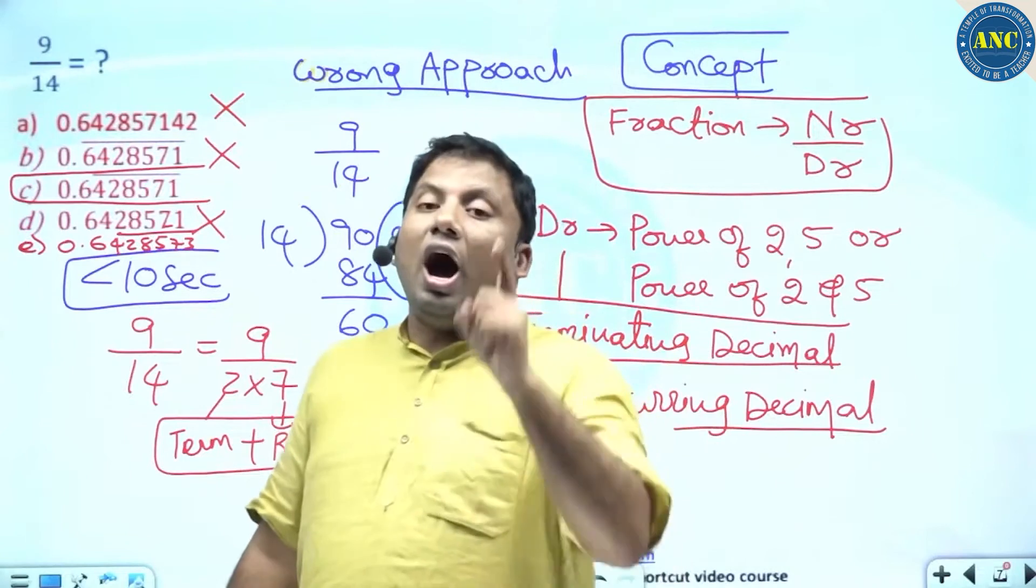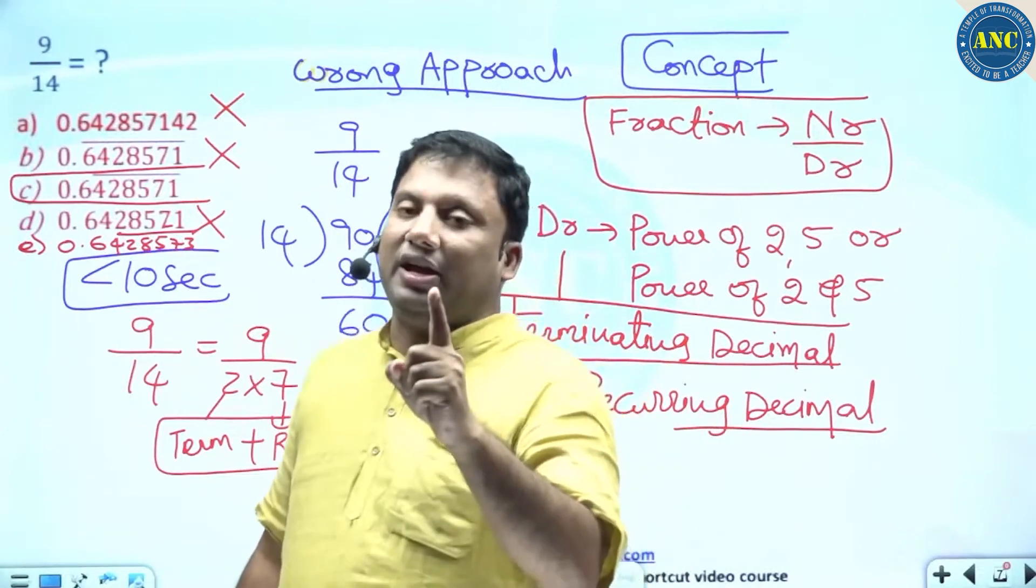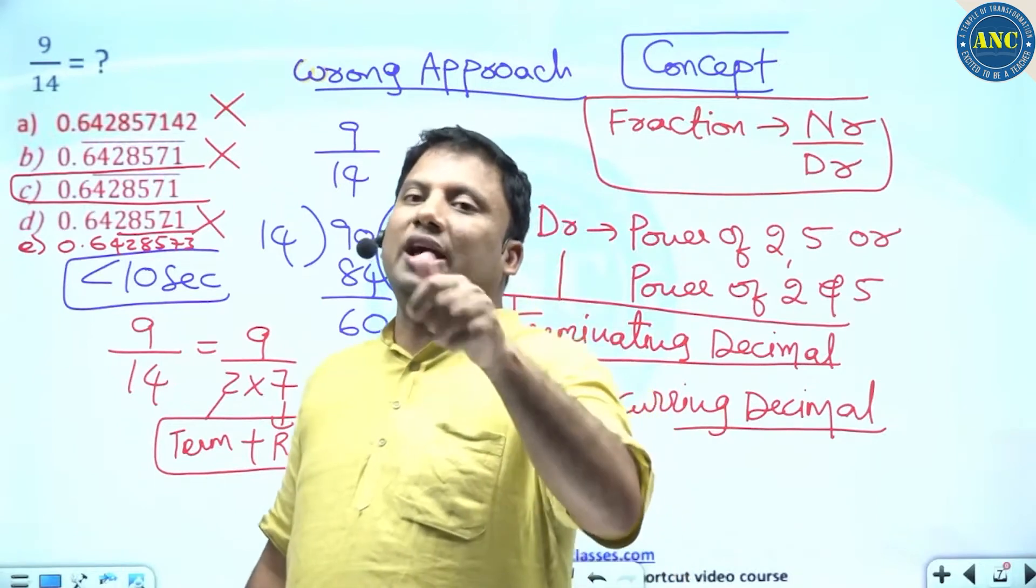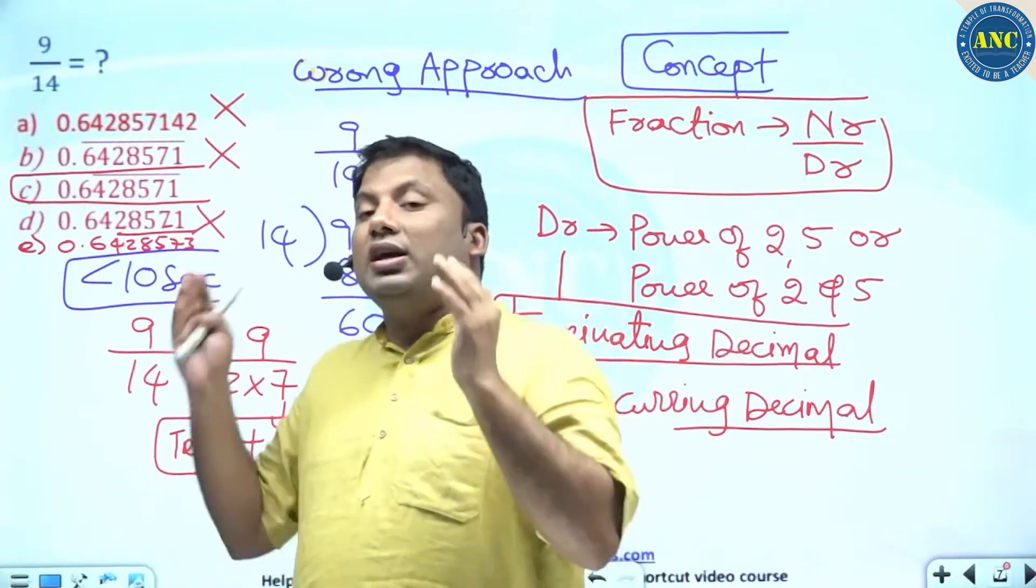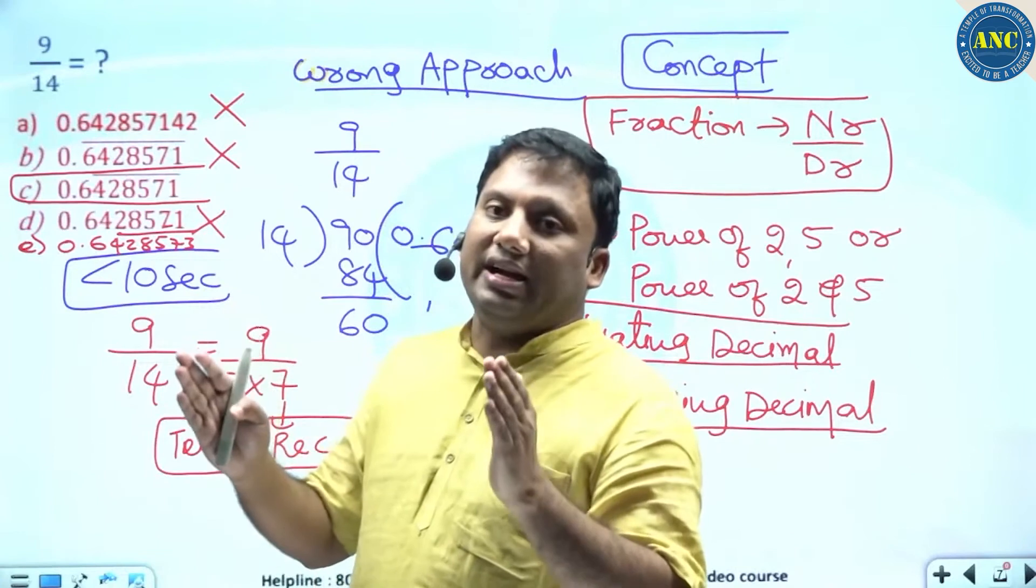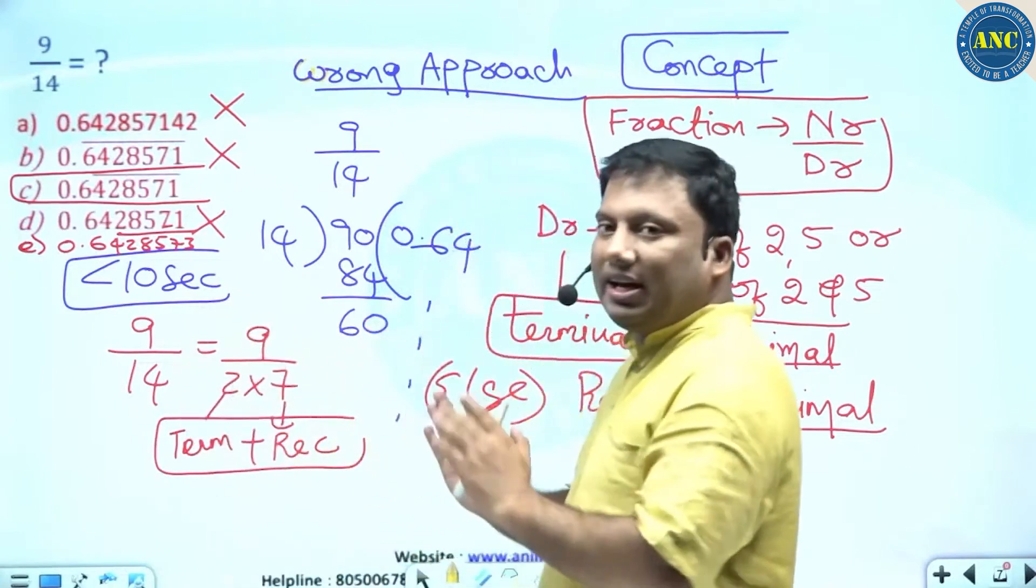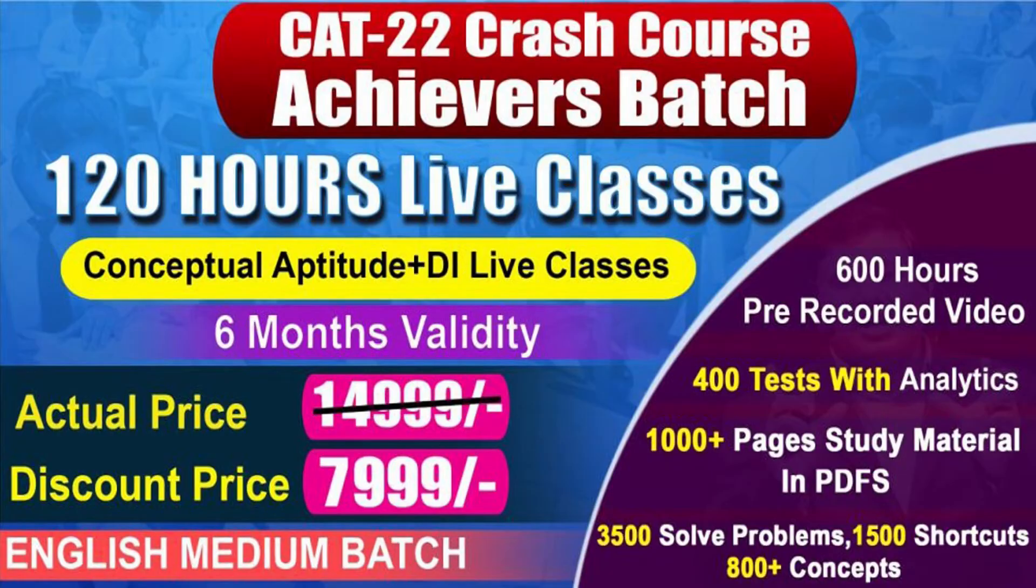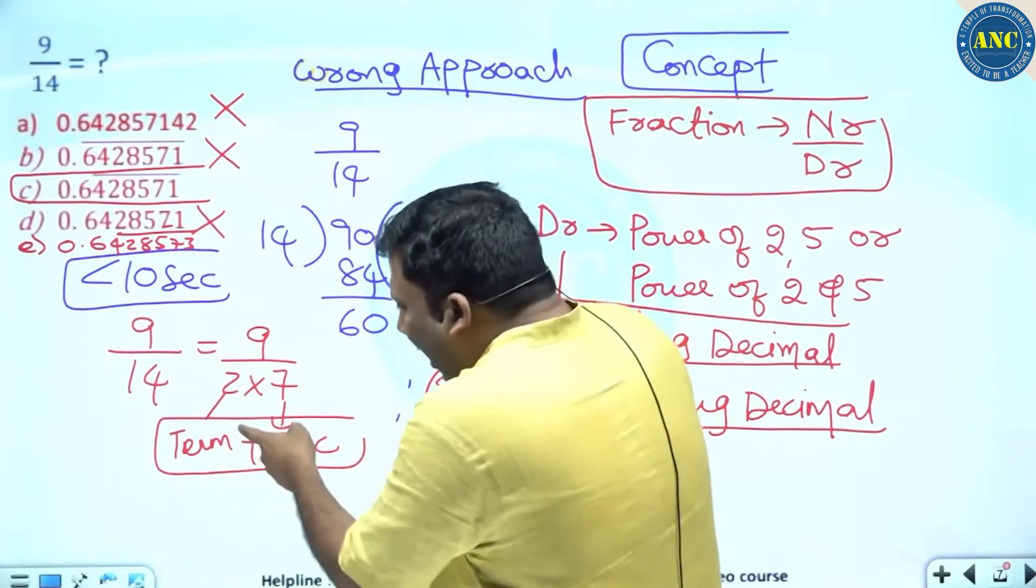Then only I will get a terminating decimal, else I will get a recurring decimal. If the denominator is a combination of 2 and 5 and other things, the answer will be a combination of terminating and recurring. 2 and 7? Not possible.